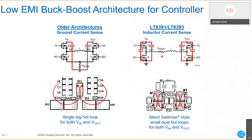These buck-boost controllers have current sense in the middle, which has a specific EMI benefit. In older buck-boost architectures, you have four switches, an inductor in the middle, and the sense on the outside — giving you two large hot loops on input and output. With this new topology, the input and output loops are split into two smaller ones. Done with proper layout, the loops are very small. Additionally, the two loops are opposed, so they start cancelling each other. The result is significantly lower EMI — smaller loops and partial cancellation.